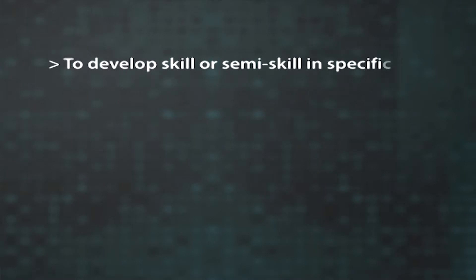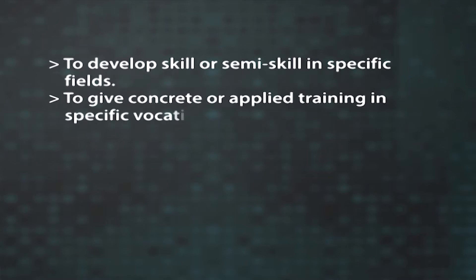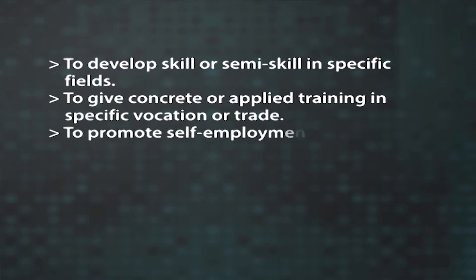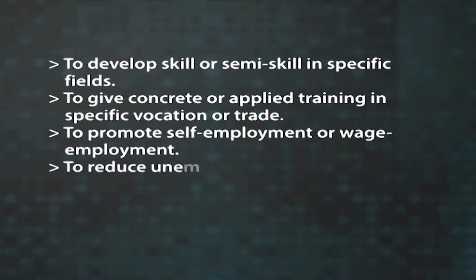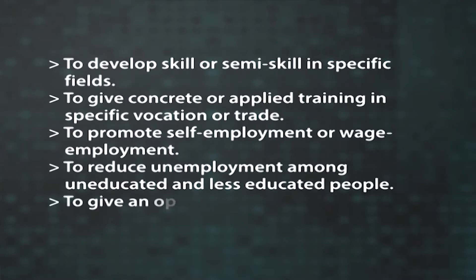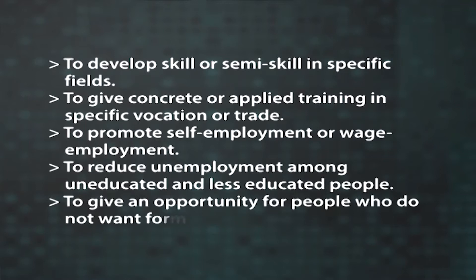Many informal institutions offer non-conventional courses as part of their vocational training. The goals of vocational training are: to develop skill or semi-skill in specific fields, to give concrete or applied training in specific vocation or trade, to promote self-employment or wage employment, to reduce unemployment among uneducated and less educated people, and to give an opportunity for people who do not want formal education. The period of entry and the timings of learning are flexible in many vocational training institutes.